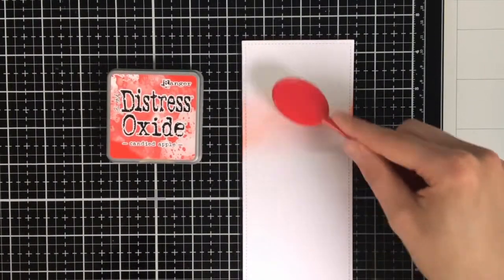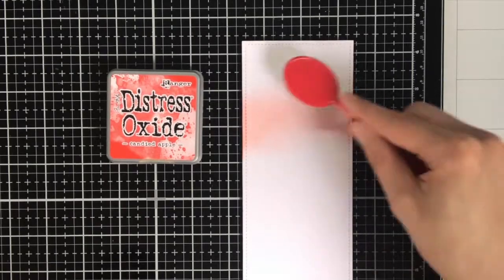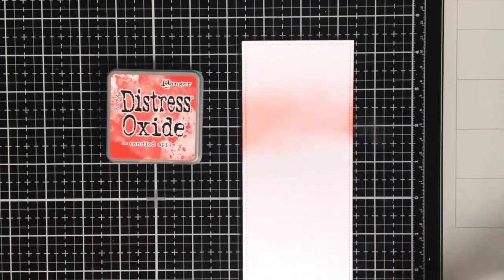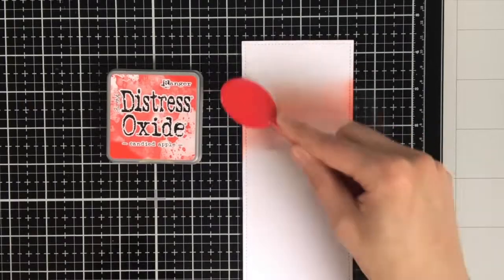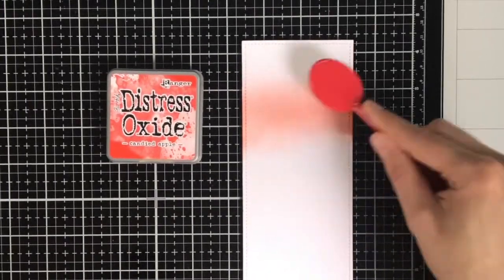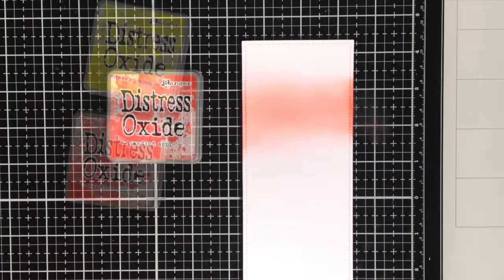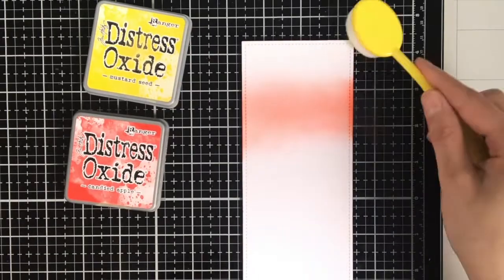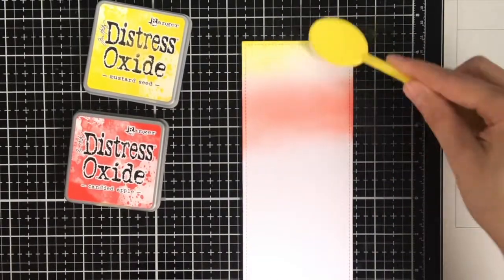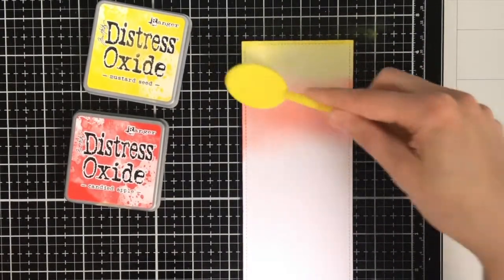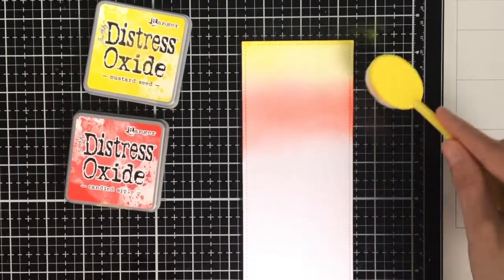Now this will be the final bit of ink blending. This will be the sky. And for this I wanted to have sort of one red orange yellowish look, so a sunrise look to it. So I'm using the Distress Oxide Ink, Candied Apple and Mustard Seed. And when you blend the two of those together then you get this nice orange look.